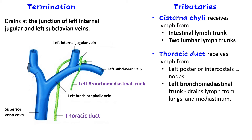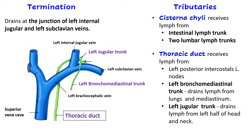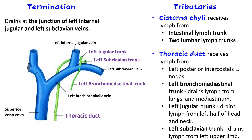The direct tributaries of the thoracic duct are: the left posterior intercostal lymph nodes; the left bronchomediastinal trunk, which drains lymph from the lungs and mediastinum; the left jugular trunk, which brings lymph from the head and neck region; and the left subclavian trunk, which drains lymph from the left upper limb. So the thoracic duct collects from the left thorax, left head and neck, left upper limb, and the lower half of the body via the cisterna chyli.